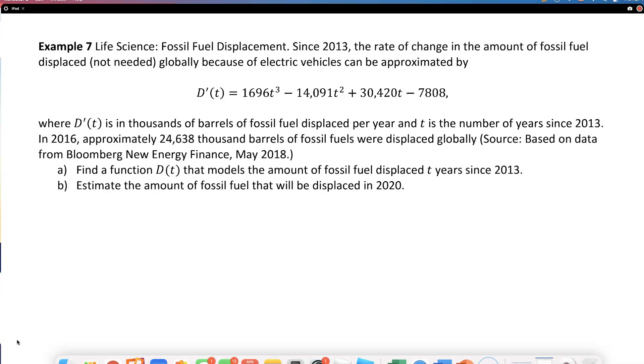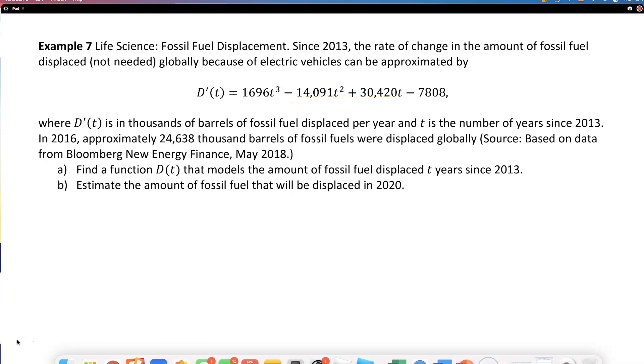Since 2013, the rate of change in the amount of fossil fuel displaced globally by electric vehicles can be approximated by a function. What they're saying is we're not using as much fossil fuel because of electric cars like Tesla. What I noticed about this function is that this is D'(t) - the derivative function. Where D'(t) is in thousands of barrels of fossil fuel displaced per year, and t is the number of years since 2013.